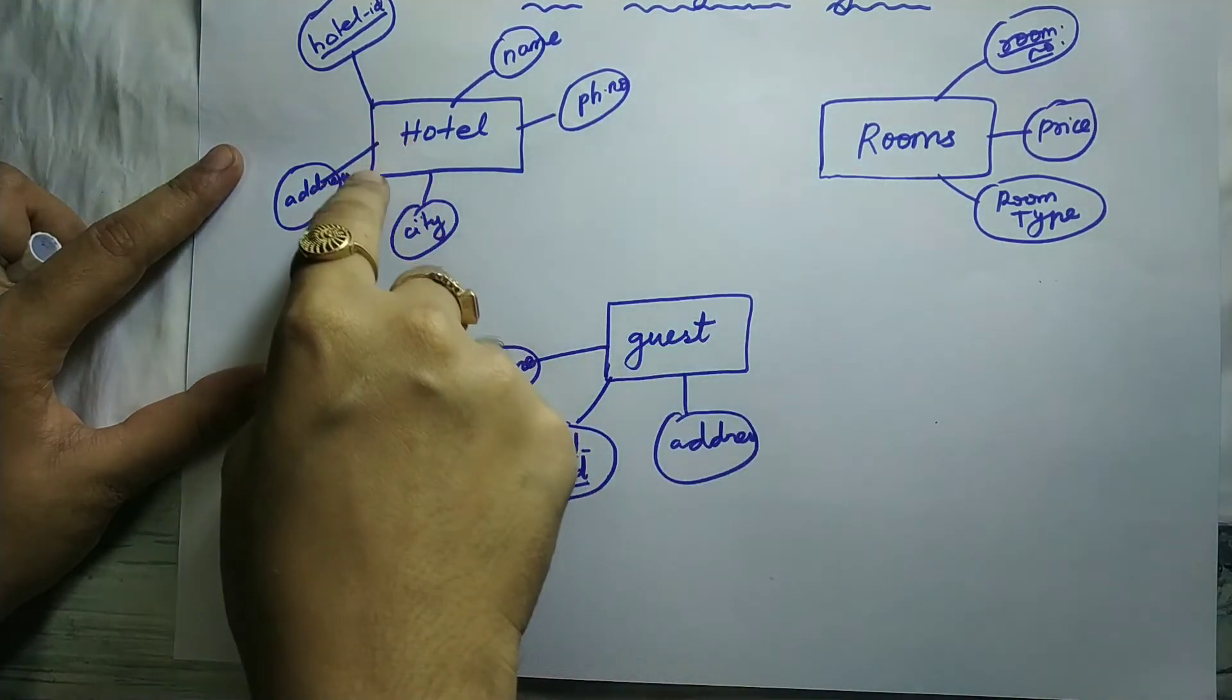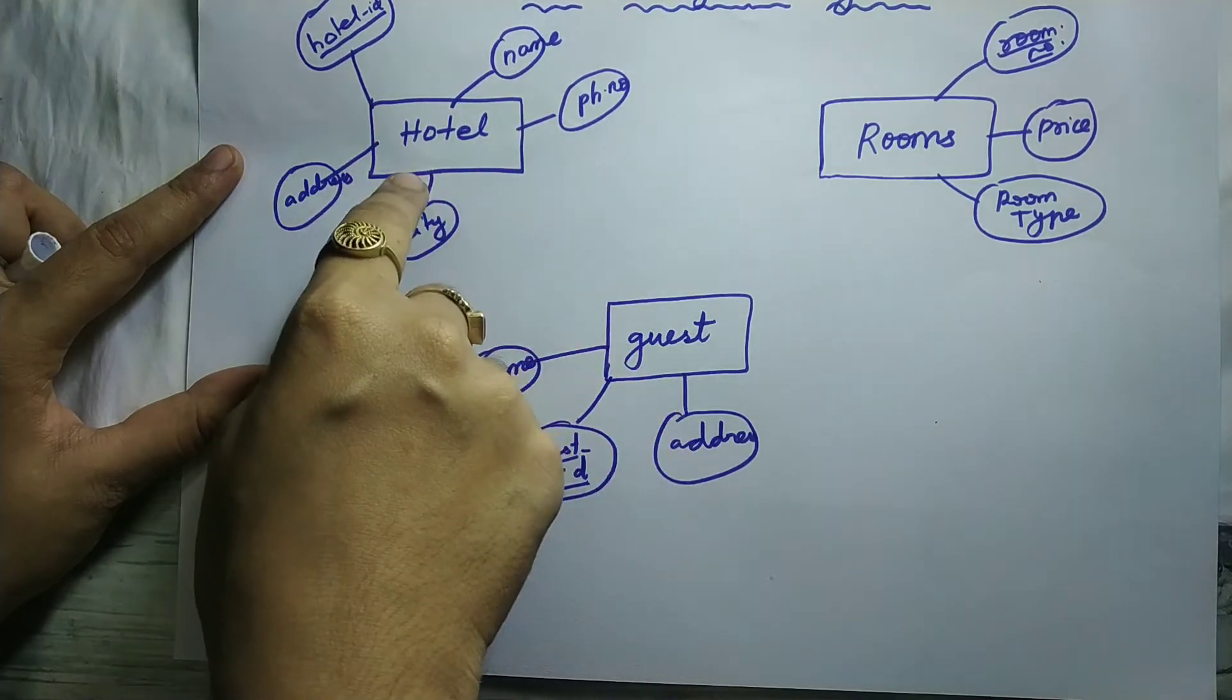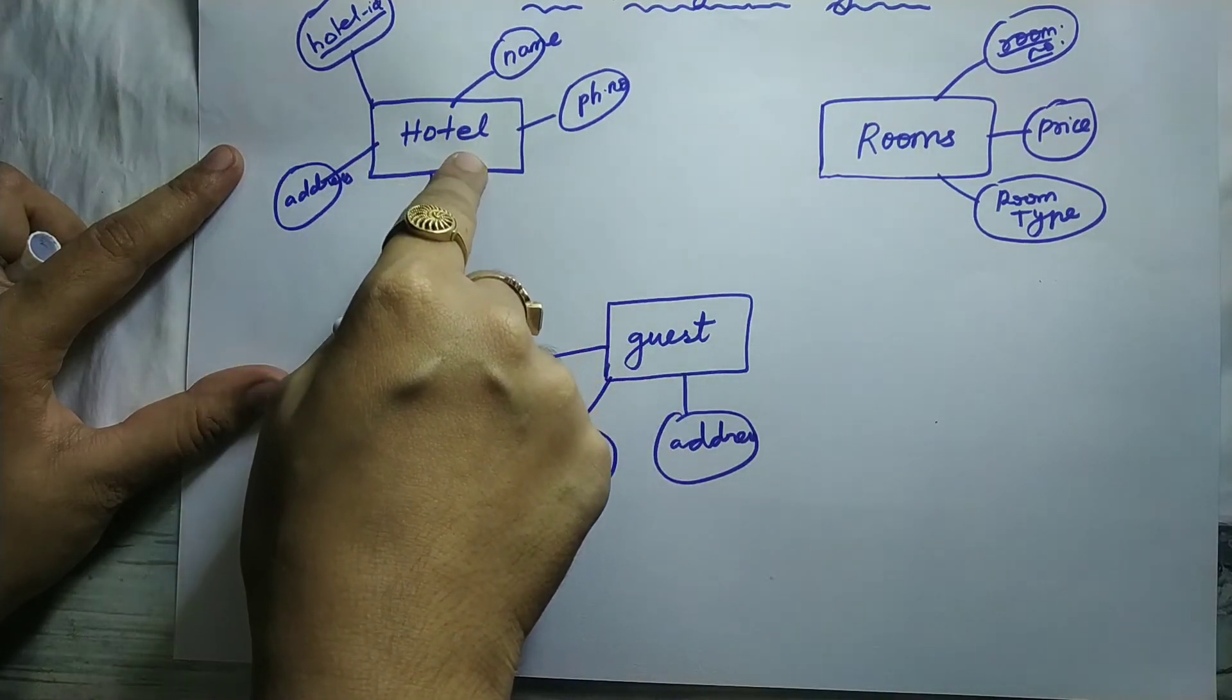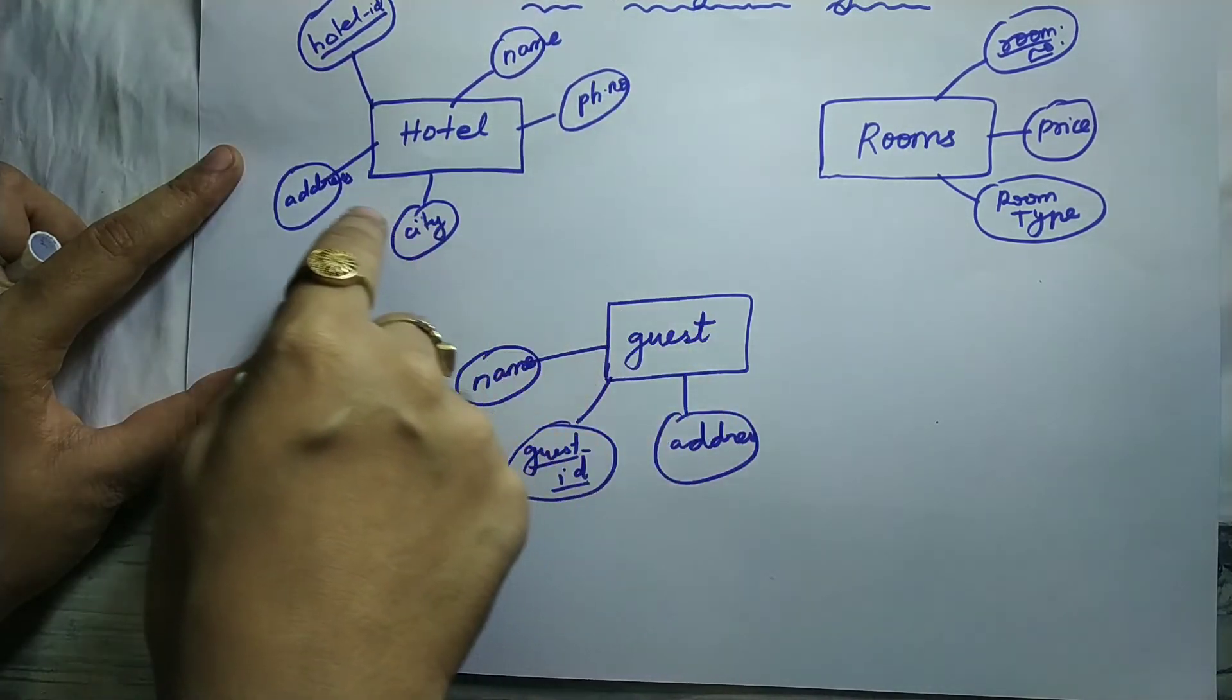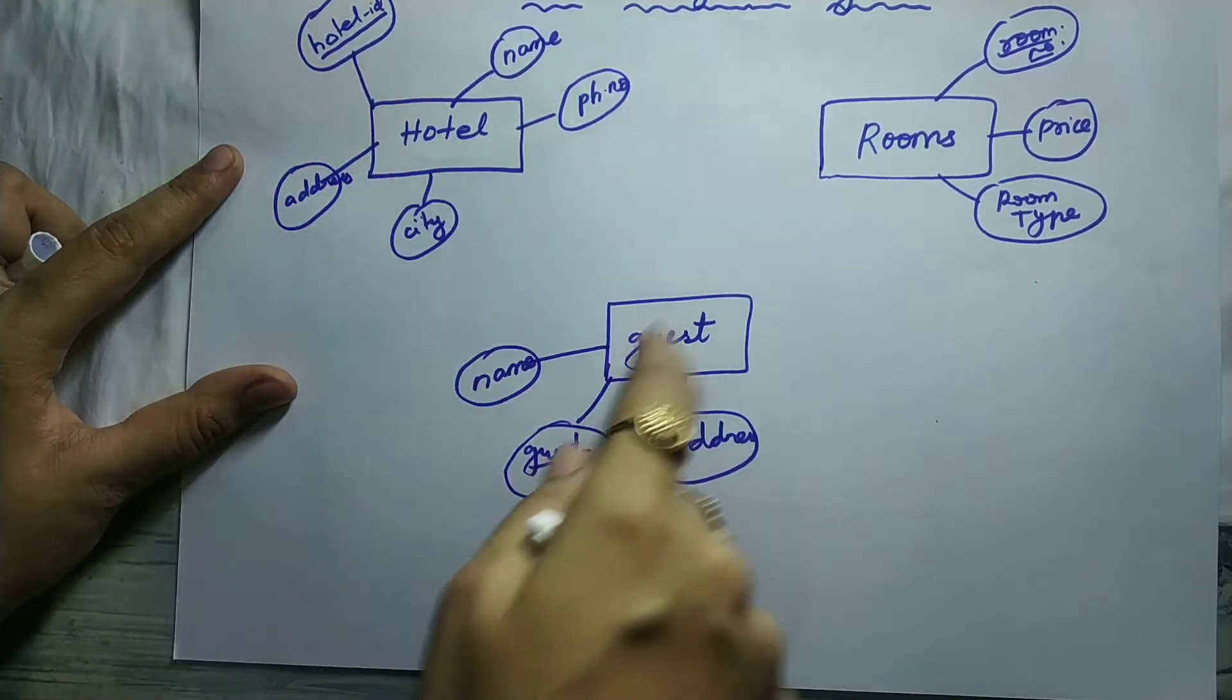Now we have drawn the rectangular box inside which we have written the entity name and surrounded by its attributes, which is written inside the oval shape.